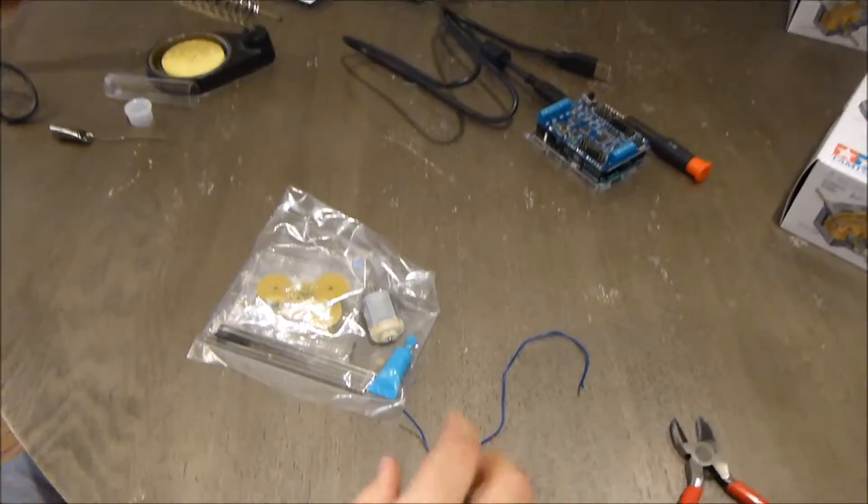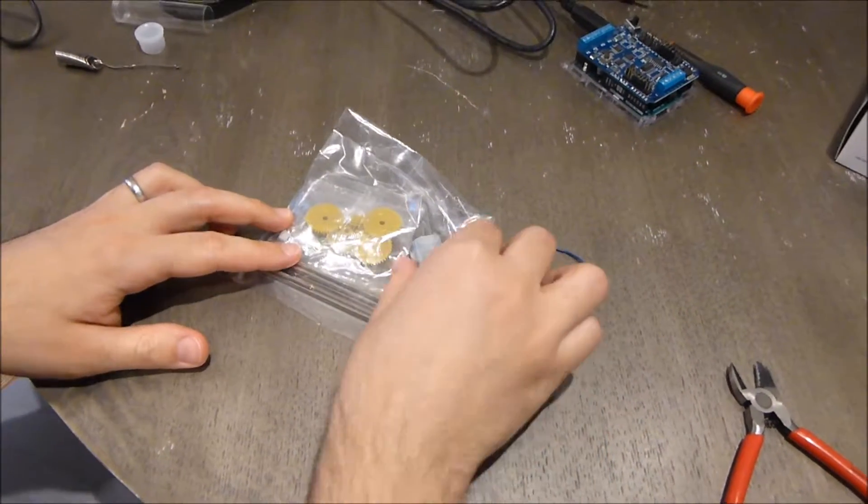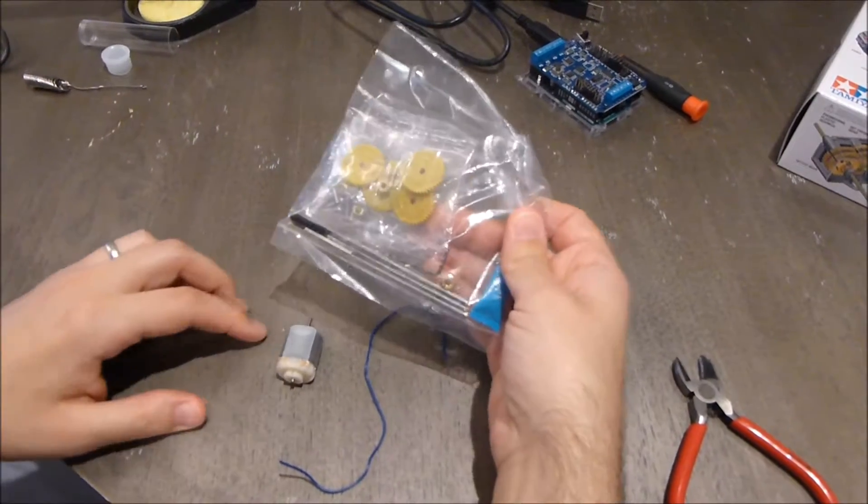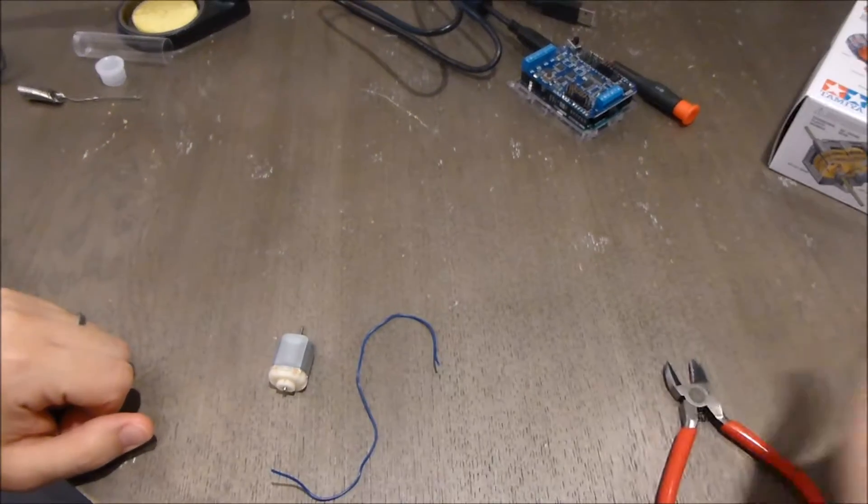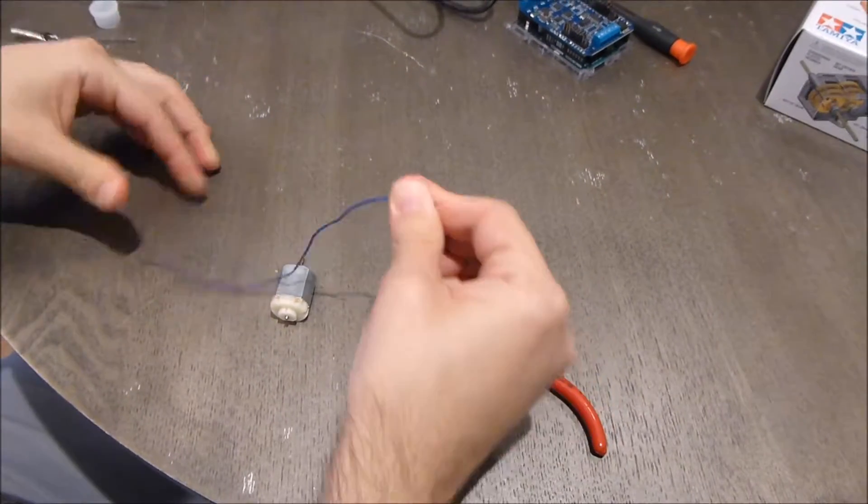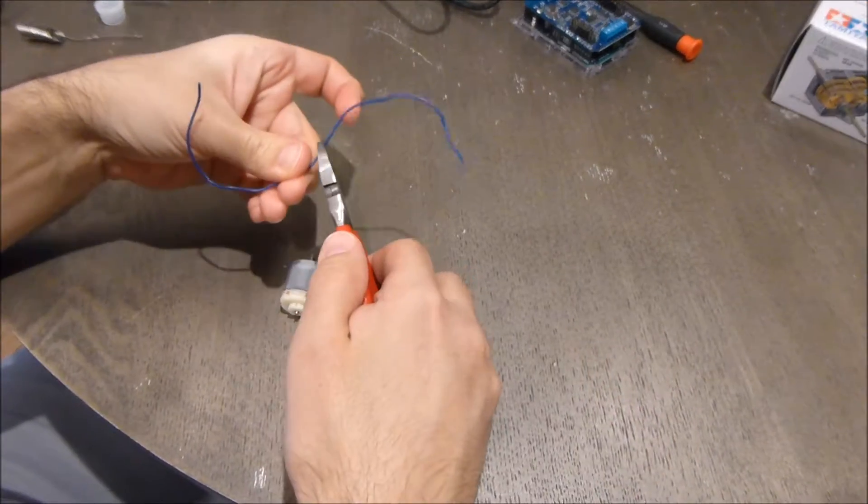So this is how it comes - the motor inside that box, in a bag with a bunch of gears and stuff and with a piece of wire. Just take the motor out and the wire out and set the rest aside. What we want to do is cut this wire in half because we need two small pieces, not one big piece.